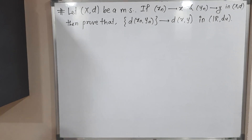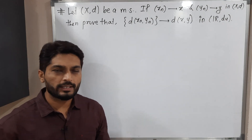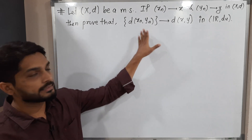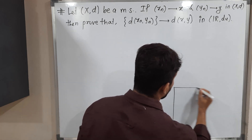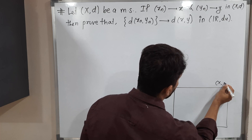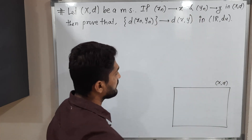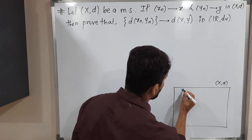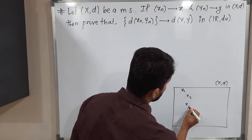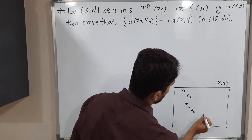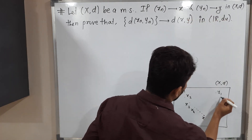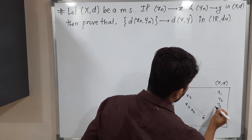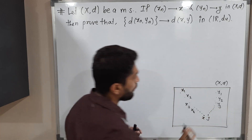In this video we are going to discuss this example. We have a metric space X,d. They have given two sequences xₙ and yₙ. The sequence xₙ — x1, x2, x3, x4 — converges to x. There is one more sequence yₙ — y1, y2, y3 — which converges to point y.